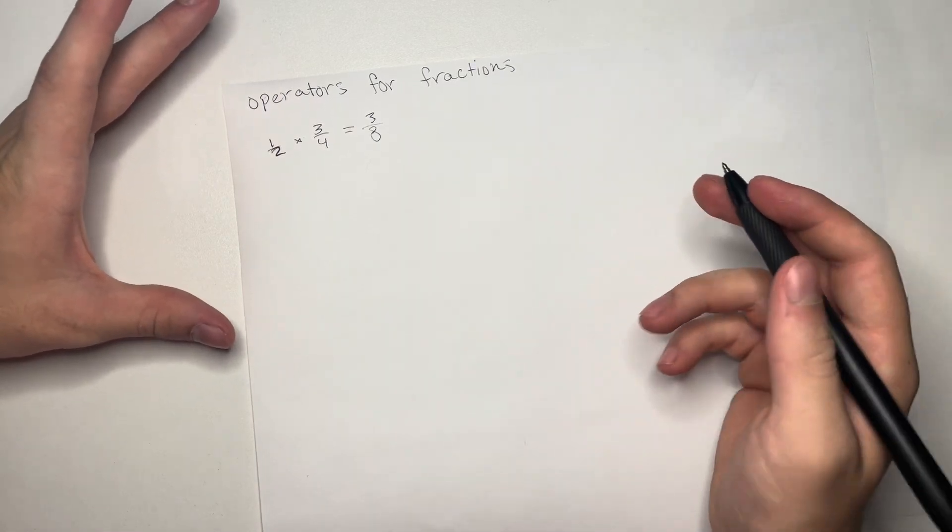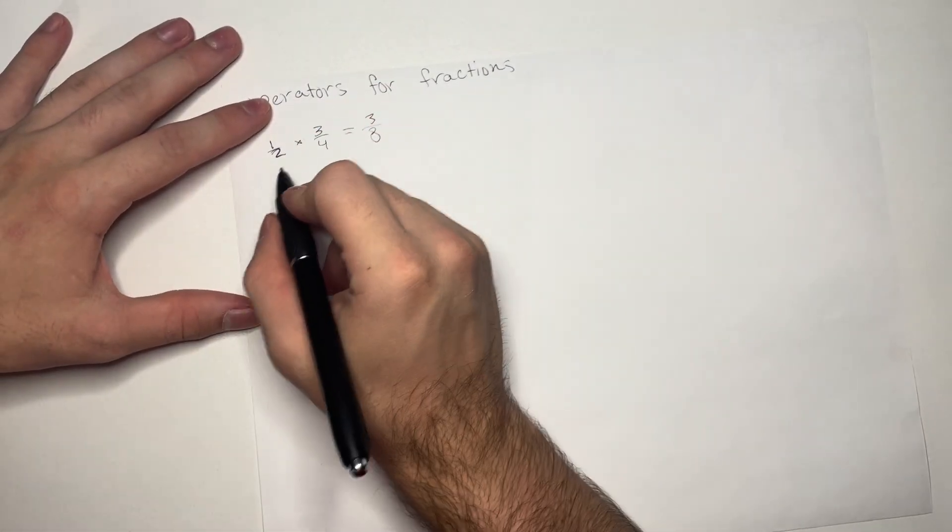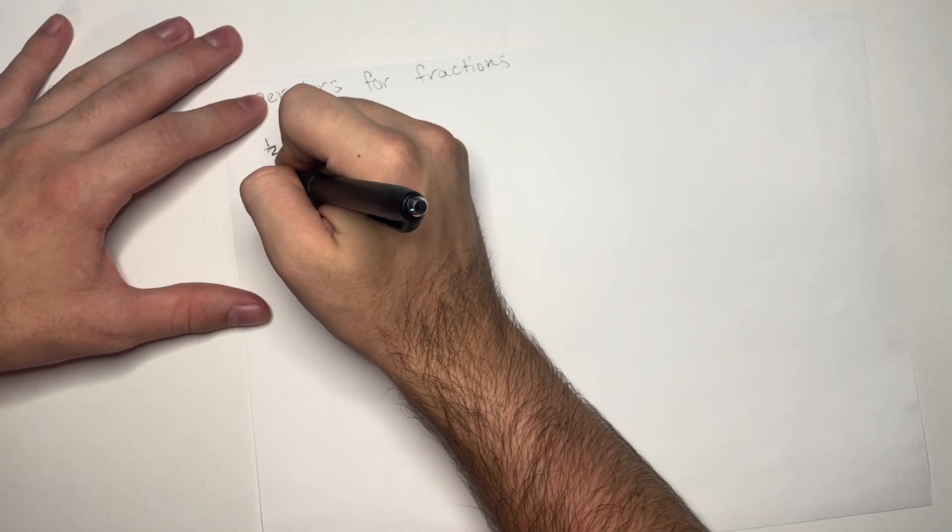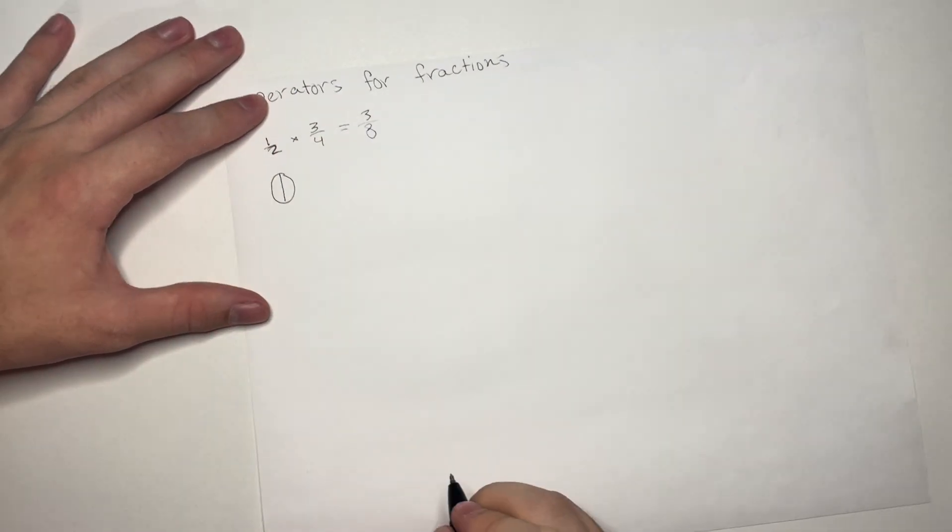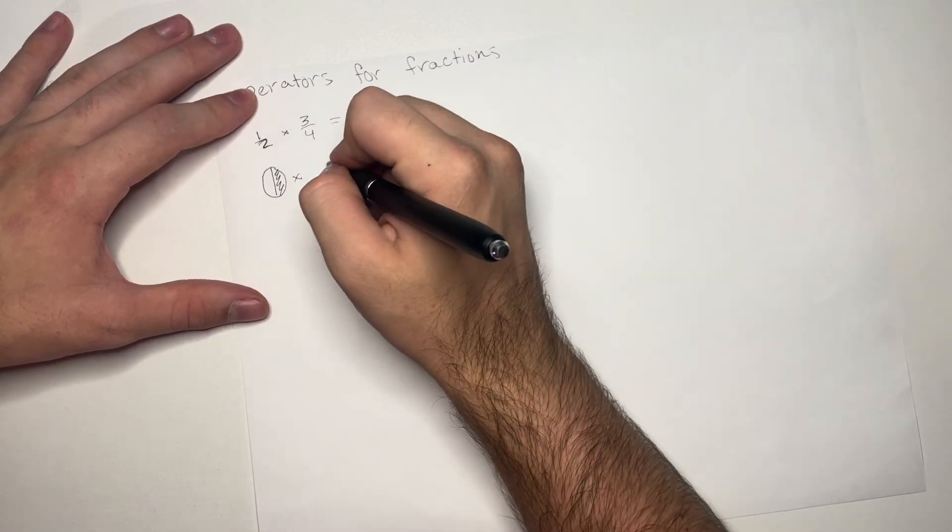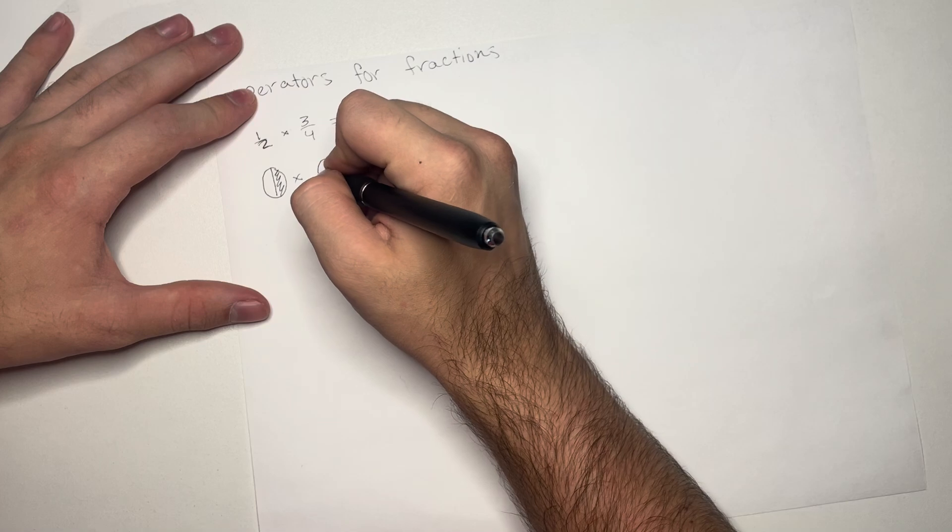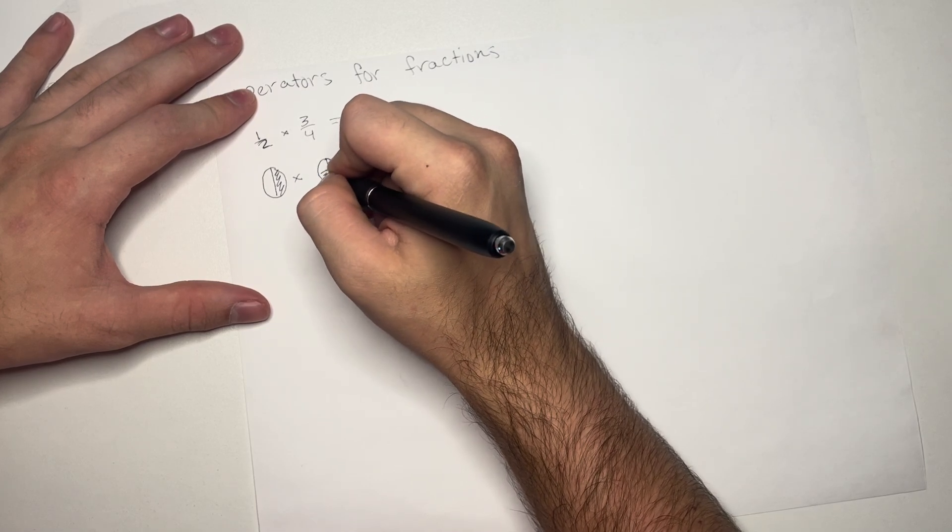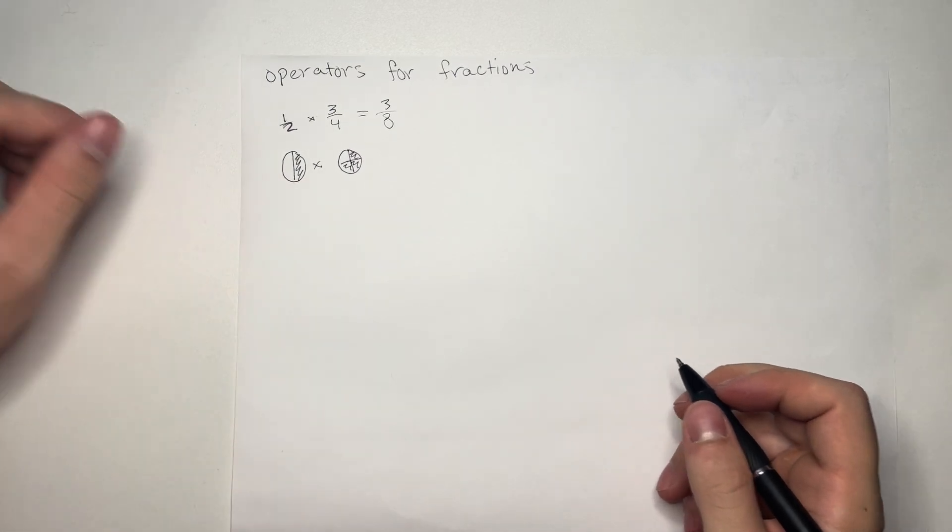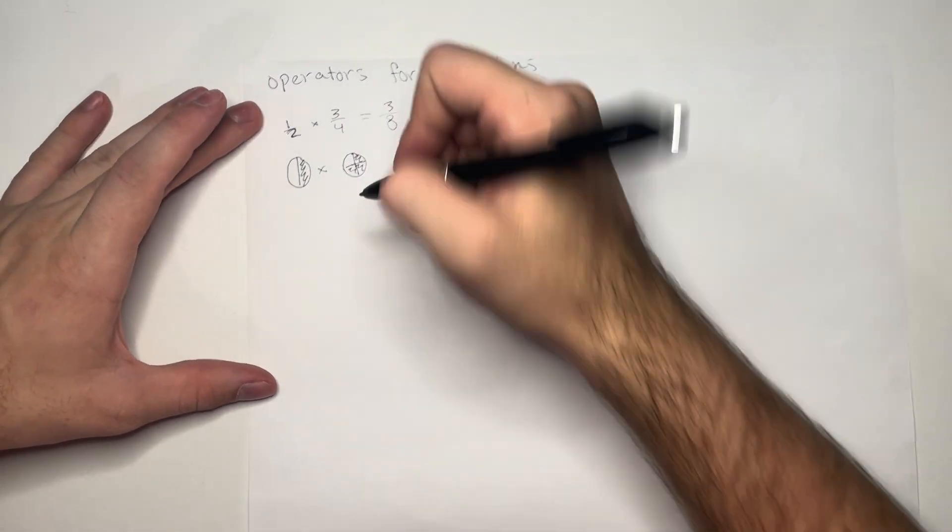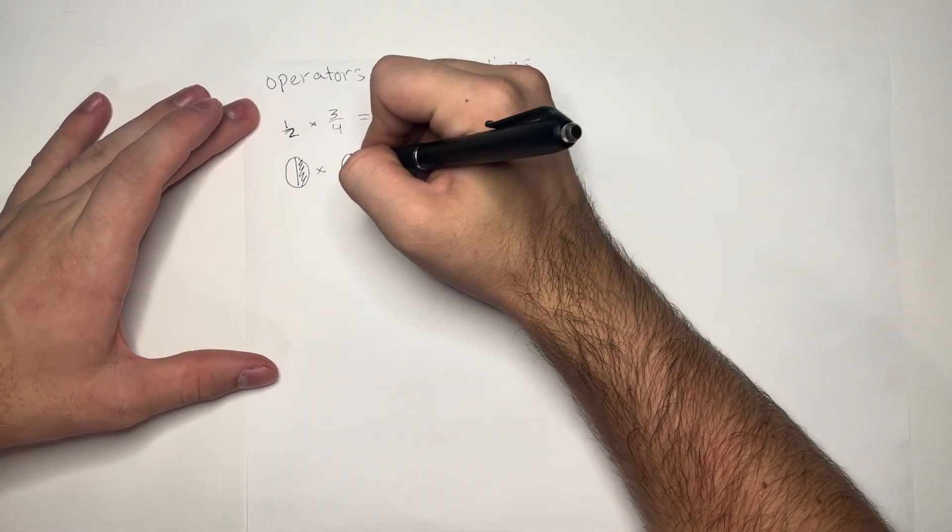And, to show you a slight geometric understanding for this, we have 1 half times 3 quarters. So, we're going to take a half of 3 quarters. And so, when we do that, we can go ahead and chop each of these.